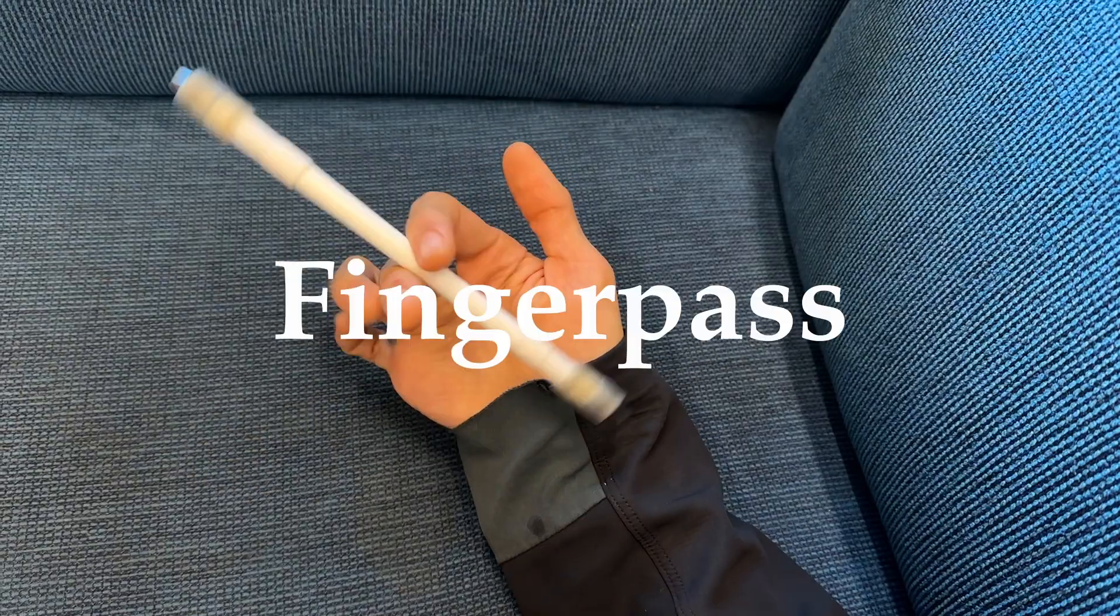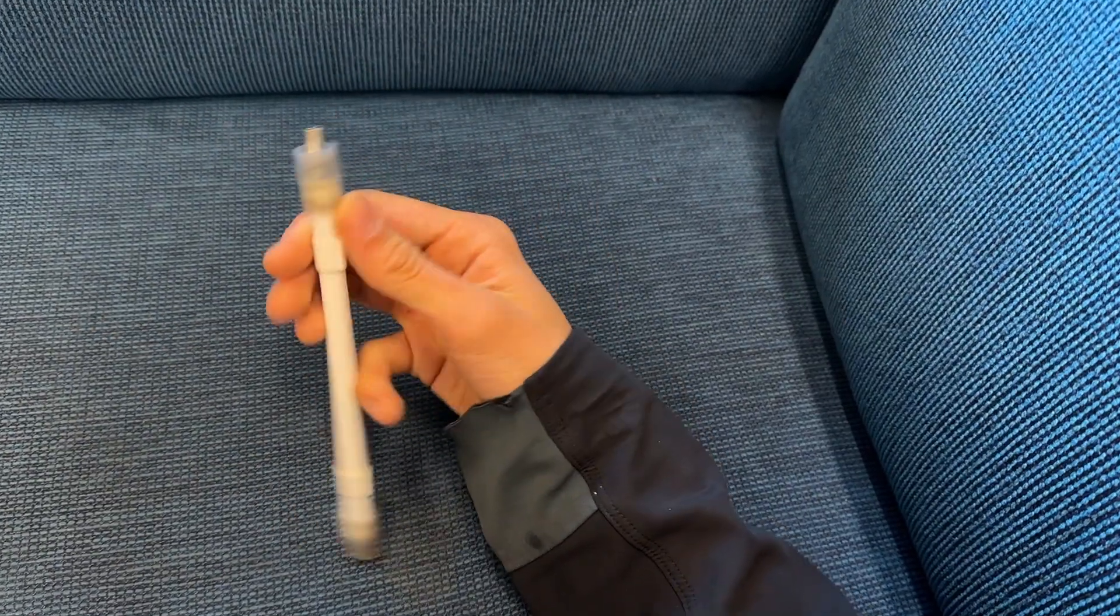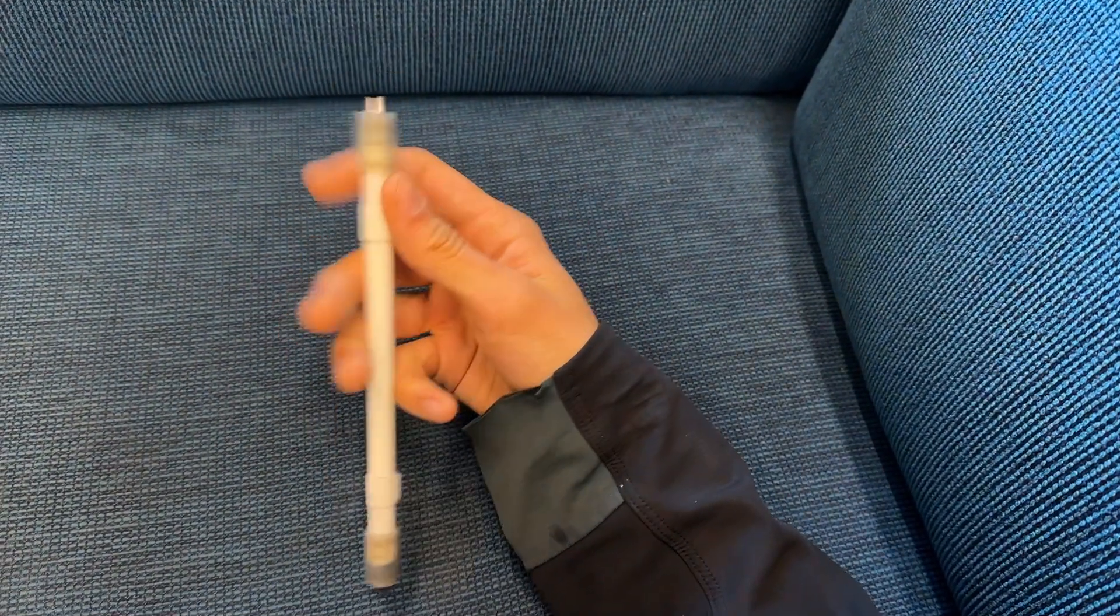Once you have your pen, we'll start with the finger pass, which looks like this. Let's watch it again in slow motion.